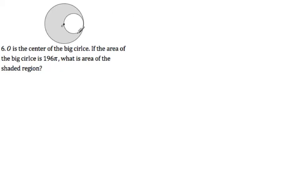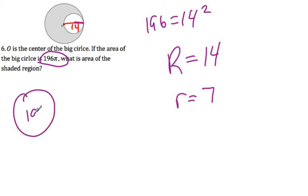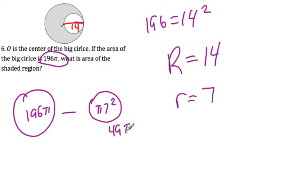If the area of the big circle is 196 pi, you should realize that 196 equals 14 squared, so the big radius is 14. If the distance across is 14, the little radius is just 7. The area of the big circle is 196 pi minus the area of the little circle, which is pi times 7 squared equals 49 pi. So you get 196 pi minus 49 pi.